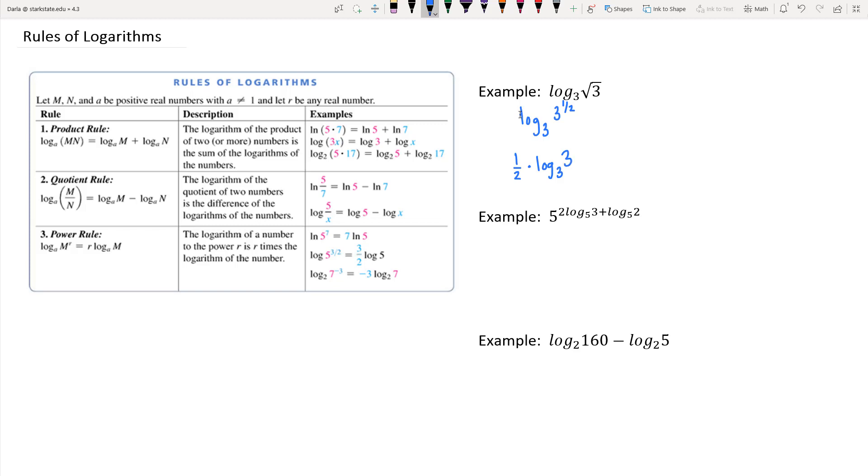The nice part is we know log base three of three is one from our properties we learned in four-two. So this is one-half times one, which is one-half.